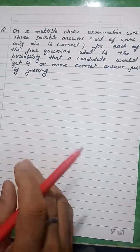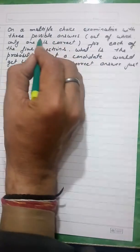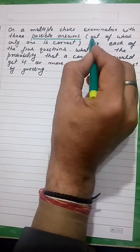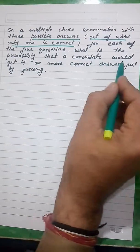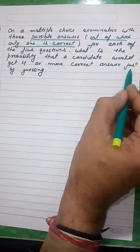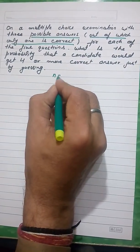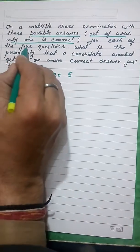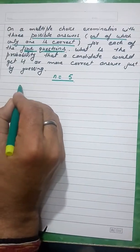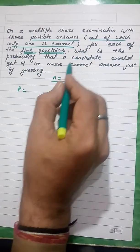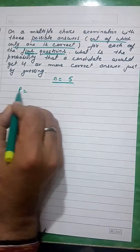Let us understand with the help of this example: on a multiple choice examination with three possible answers, out of which only one is correct, what is the probability that a candidate would get four or more correct answers just by guessing? The experiment is done five times, as there are five questions.